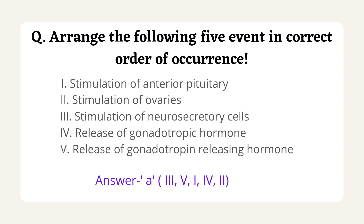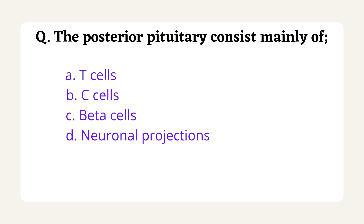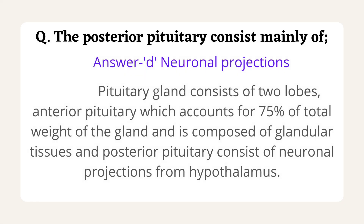The next question is: the posterior pituitary consists mainly of — options are T cells, C cells, beta cells, or neuronal projections. This question was asked in AIIMS Partner Nursing Officer Exam 2020. The correct answer is option D, neuronal projections. The pituitary gland consists of two lobes: the anterior lobe, also called adenohypophysis, and the posterior lobe, also called neurohypophysis. Adenohypophysis accounts for 75% of the gland's total weight and is composed of glandular tissue, whereas the posterior pituitary is composed of neuronal projections from the hypothalamus — meaning it is made up of nervous tissue.